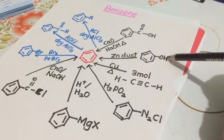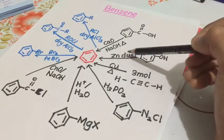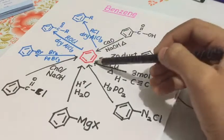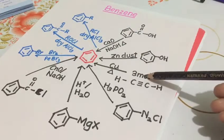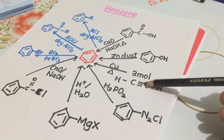A benzene ring with OH, Zn dust can be added to get benzene. Three moles of carbon triple bond carbon...